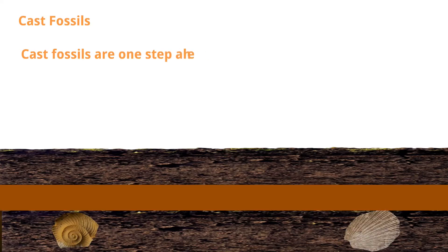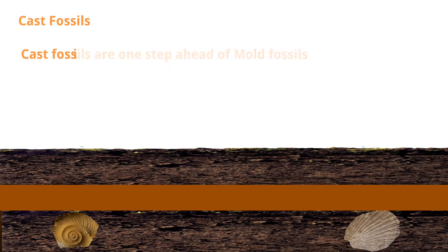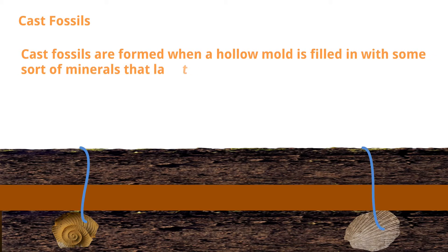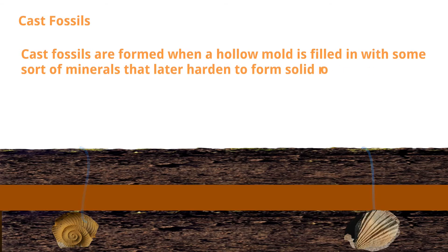Cast fossils are one step ahead of mold fossils. Cast fossils are formed when a hollow mold is filled in with some sort of minerals that later harden to form solid rock.